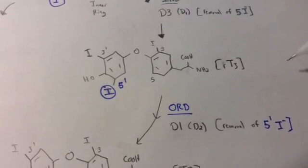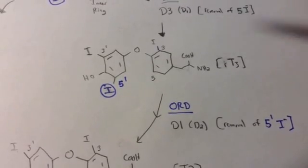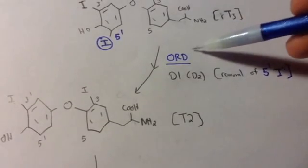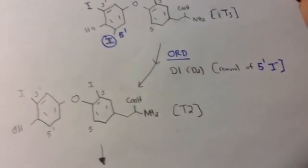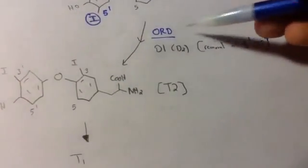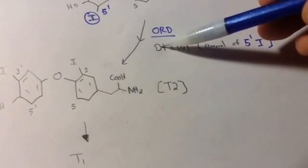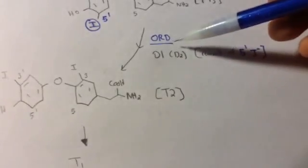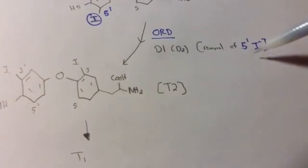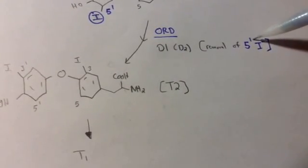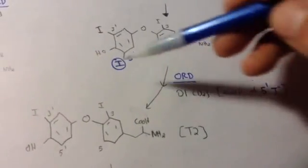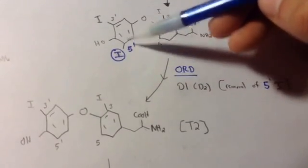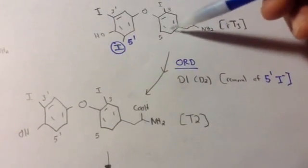Okay, so then the second step, it's going to go through the ORD, which is the outer ring deiodinase. And that uses D1 in this case, and to a lesser extent D2. And we're going to have removal here of the five prime. So if you take a look up here, the five prime's on the outer ring, which is out here. This is the inner ring, remember.